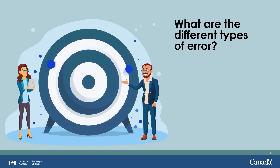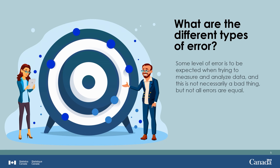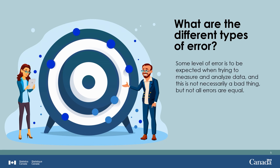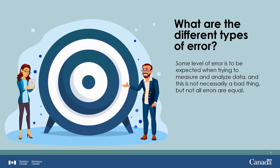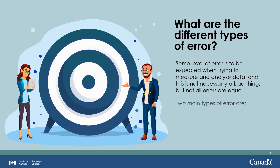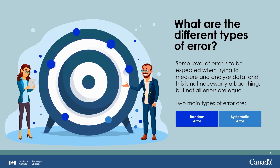When trying to measure and analyze data, some level of error is to be expected. But not all errors are equal. Two main types of error we will learn about today are random error and systematic error.